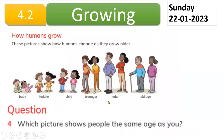Question 4: we learned how humans grow. Look at these people — here are babies, toddlers, children, teenagers, adults, and old age. Look at these humans, they are changing from baby to old age.